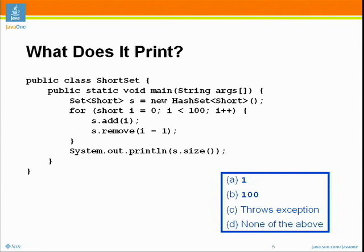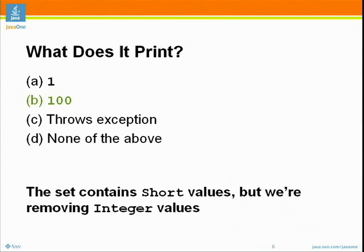That was about evenly split between A, B, and C. Well, let's find out what it really does. What does it actually do? It prints 100. Why does it do that? It removes all those elements. The problem is that it adds shorts to the set, but it removes integers.